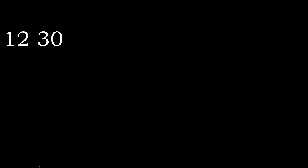30 divided by 12. 3 is less, therefore next. 30 is not less, therefore with 30: 12 multiplied by which number is nearest to 30 but not greater?